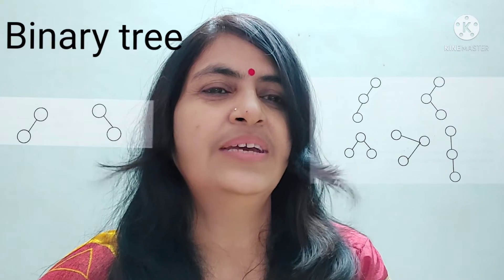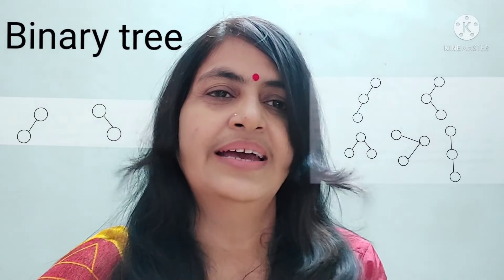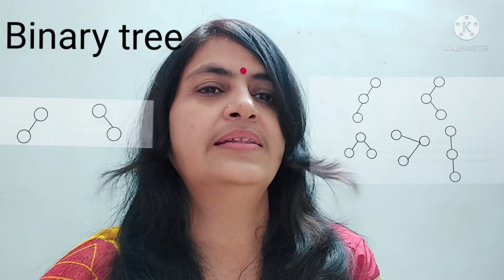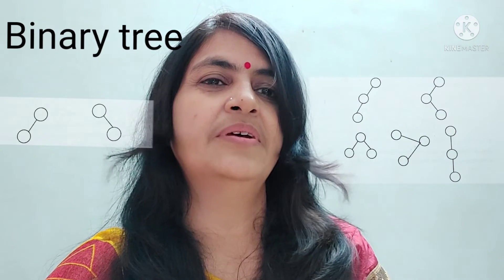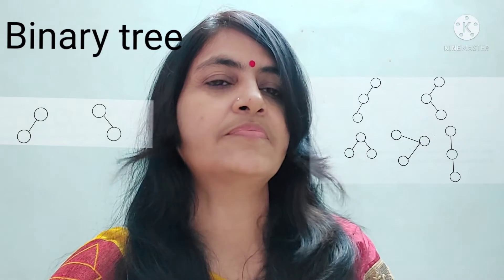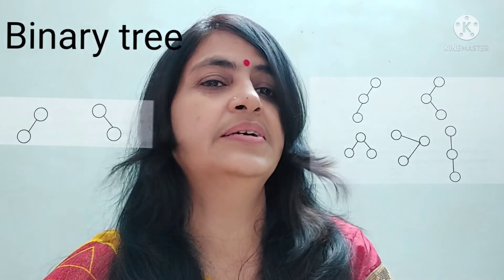We think that there is a root node and it has a sub-tree, a left sub-tree. Either it has zero child, one child, or two child. This is the main thing we have to remember. The last elements or nodes of this tree are called leaf.